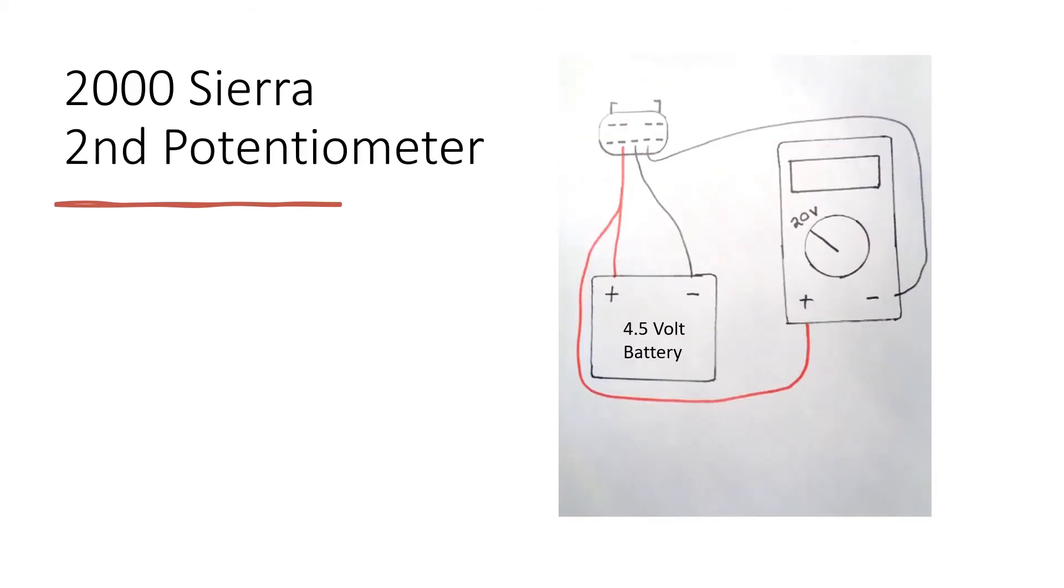For the second potentiometer, you connect the positive from the battery and the multimeter to this bottom left pin second from the top from the bottom and connect the negative from the battery to this middle pin and the negative from the multimeter to this bottom second to the right pin.